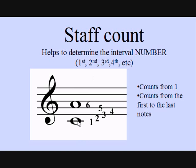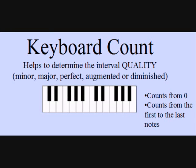For example, from C to A we count one, two, three, four, five, six lines and spaces — that means this is going to be a sixth, a sixth something. We don't know the quality yet, but we'll discover it with the other part we're going to do, which is the keyboard count. We start from C counting as number one, and we end up at A.